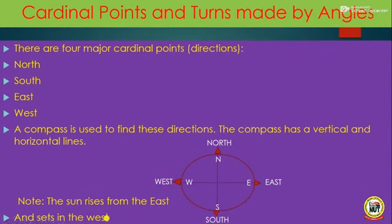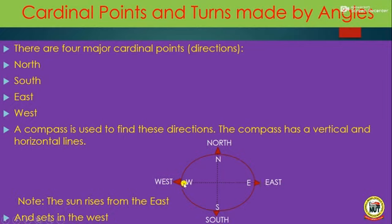To find out direction on your own: when you wake up early in the morning as the sun is rising, face the direction of the sun. The direction where the sun is rising from is called the East. And in the evening when the sun is setting, the direction the sun is setting towards is referred to as West. So the sun rises from the East and sets in the West.